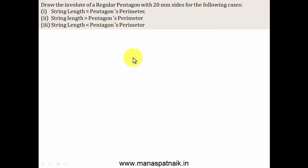Alright. So, in this slide, we'll try to do this case: string length is equal to the pentagon's perimeter. First of all, what we need to do is make a pentagon. Something of this sort. You know very well that a pentagon has an internal angle of 108 degrees. Let's say all the five corners are represented by 1, 2, 3, 4, 5.